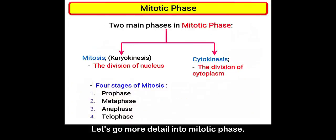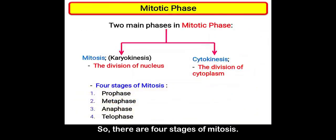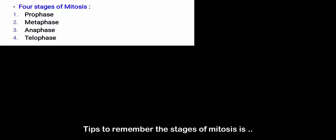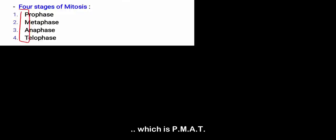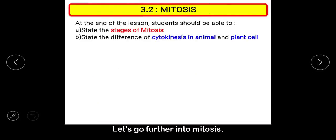There are four stages of mitosis: prophase, metaphase, anaphase, and telophase. A tip to remember the stages of mitosis is to remember the first letter of the four stages, which spells out PMAT. Let's go further into mitosis.